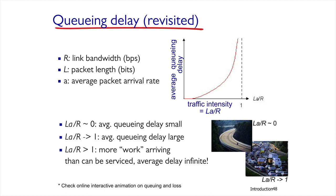We'll look at three situations of the ratio A times L divided by R. If the number we get is close to zero, that means the queuing time in the router is short, because the router gets rid of packets at a high rate or at a rate close to the one packets arrive at. If the number is close to one from below, then packets are waiting for a relatively long time in the router queue. And if the number is higher than one, the rate of packet arrival into the router is higher than the rate it gets rid of them, and the delay increases because the queue fills.